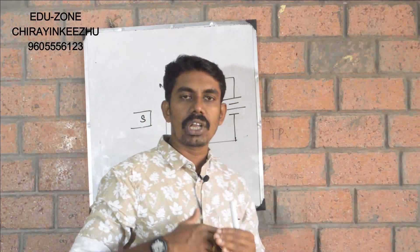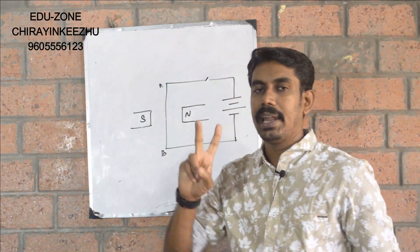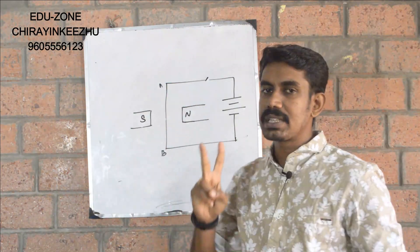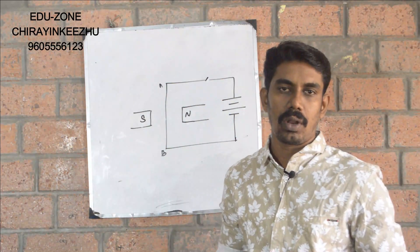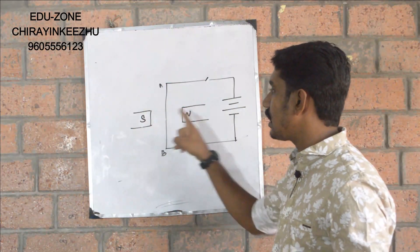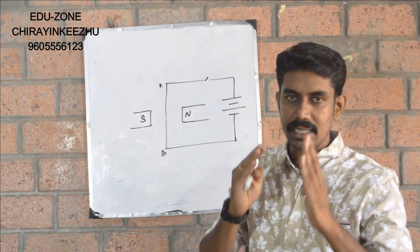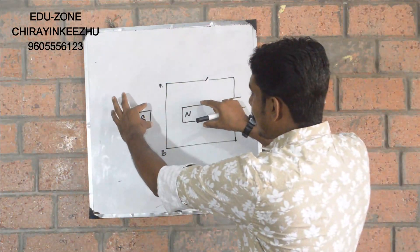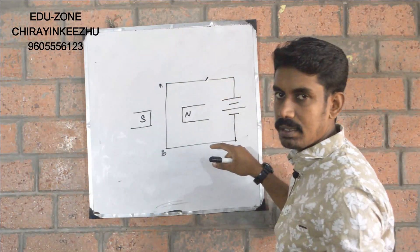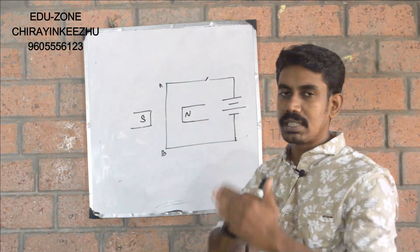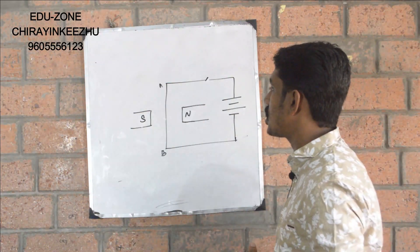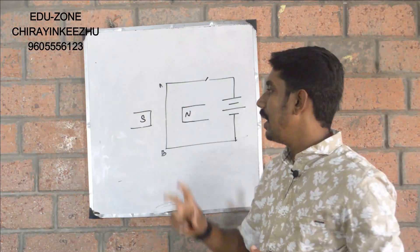The direction of the force is to move. The direction of the motion depends on two factors. The direction of the motion is influenced by two factors: the direction of the current and the direction of the magnetic field.